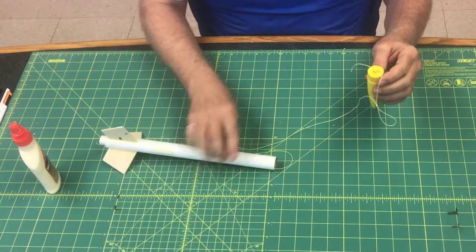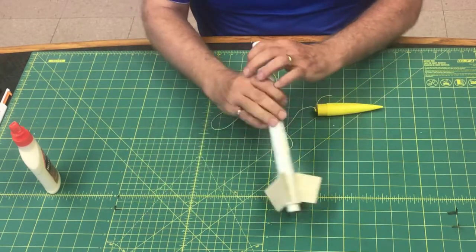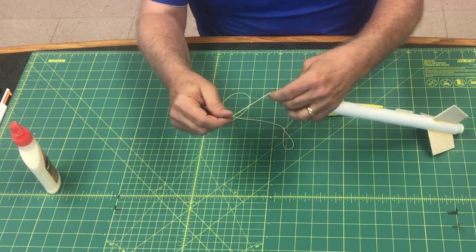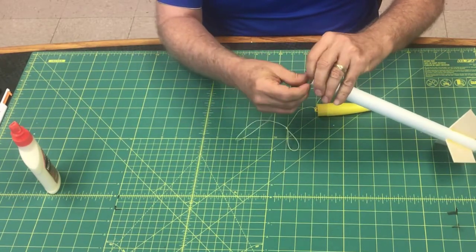You have your body tube and you have your nose cone, and your rocket's pretty much all assembled here. Just take your shock cord and shove it down into the body tube.